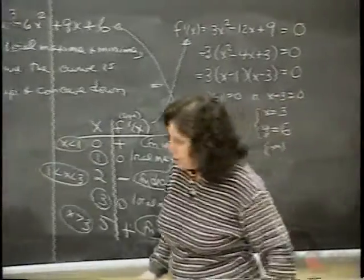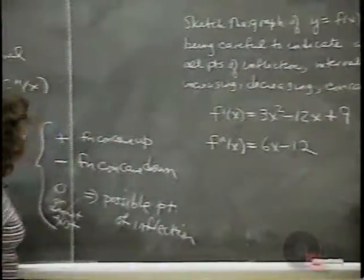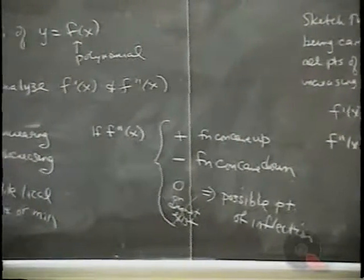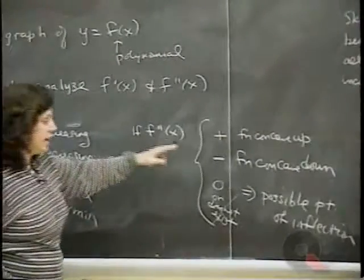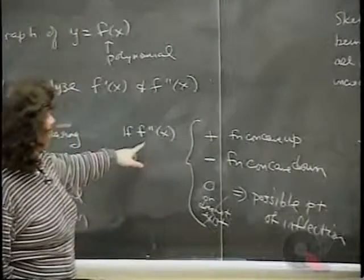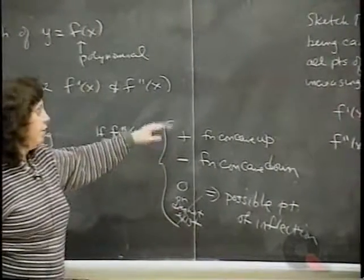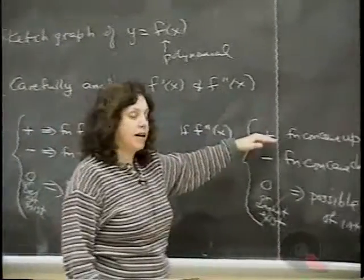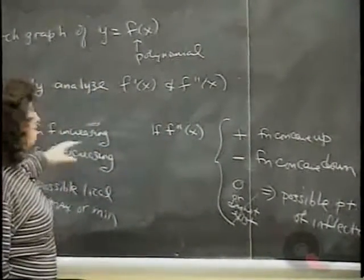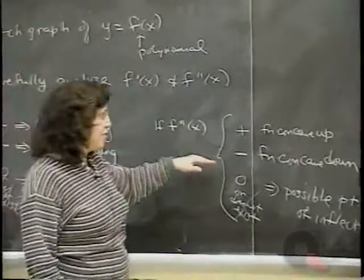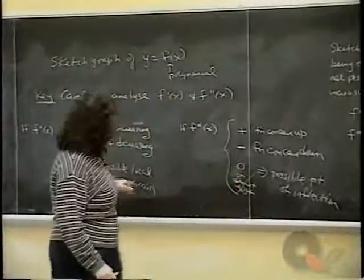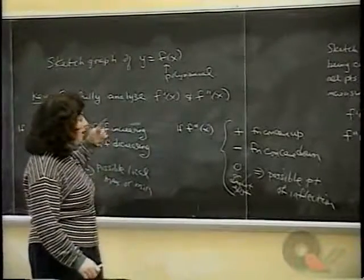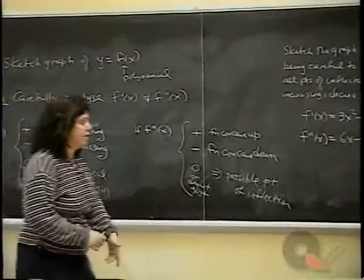Now we repeat the same analysis on the second derivative to find concavity and points of inflection. If the second derivative is positive, the curve is concave up. If negative, concave down. When the second derivative is zero, we may have a point of inflection — but only if the sign changes.